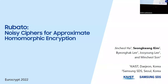The next talk is about Rubato, a noisy cipher for approximate homomorphic encryption. This is joint work by Jin Shio-ha, Seon Kwong Kim, Byung Gak Lee, Jo Yong Lee, and Mishio Son. The talk will be given by Seon Kwong. Good morning, everybody. Welcome to my talk. This is Seon Kwong Kim, and this is a joint work with my co-authors from KAIST. I'm from Samsung SDS. Today, what I want to talk about is Rubato, a noisy cipher for approximate homomorphic encryption.